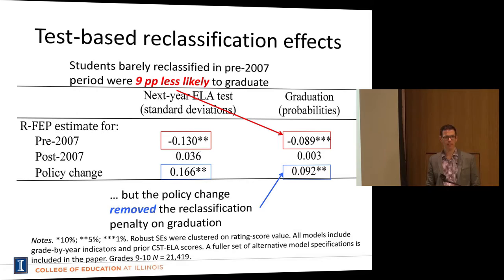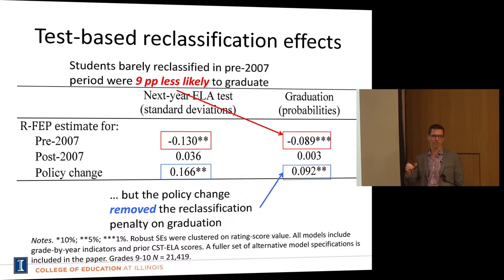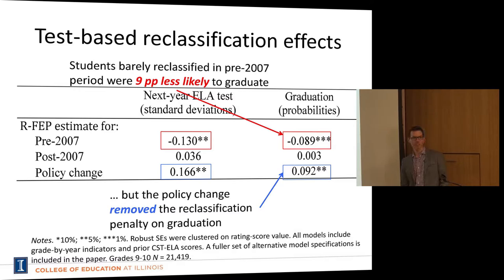It's a 9 percentage point difference in graduation probability. Off the top of my head, I don't know the exact baseline graduation rate — let's say it was 59 percentage points just before the threshold, and those who attained the criteria and were reclassified would be at 50 percentage points. I don't know exactly what the mechanism is that explains why kids are graduating at such lower rates — that would involve a much more in-depth qualitative analysis.